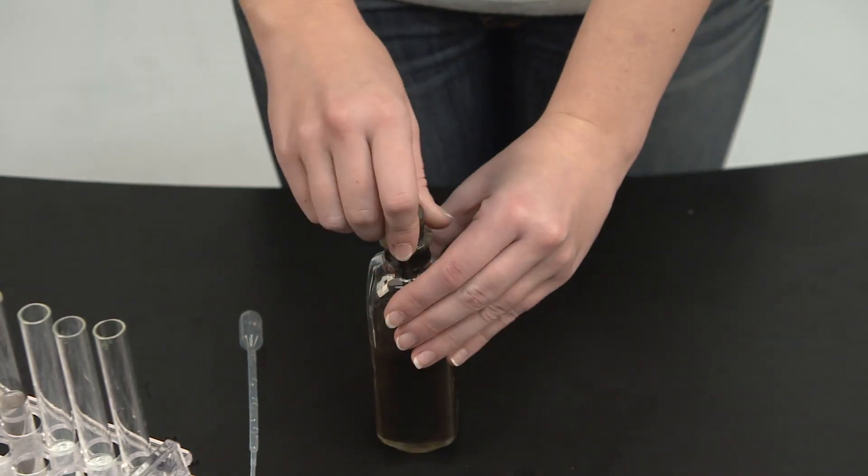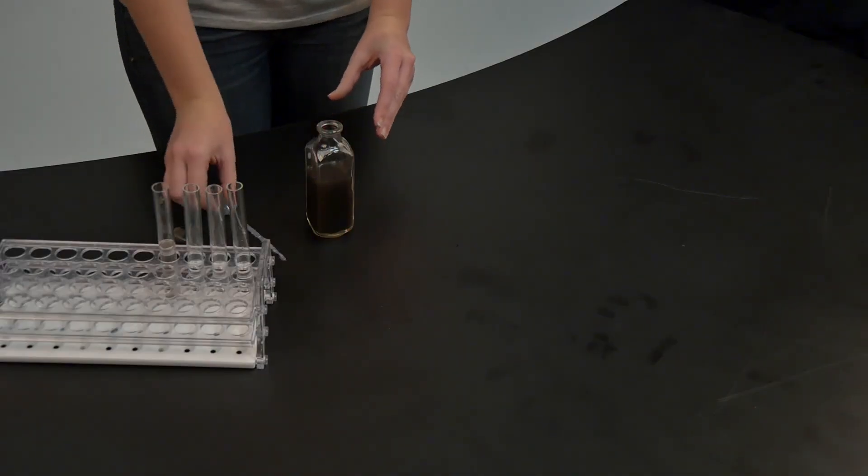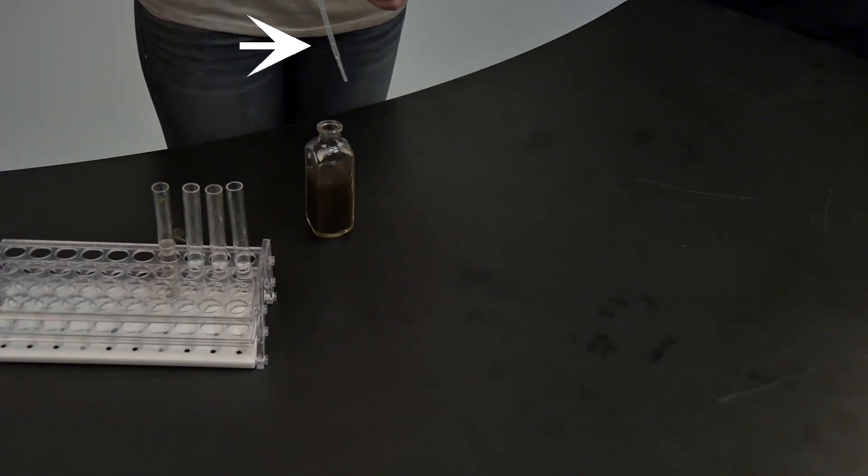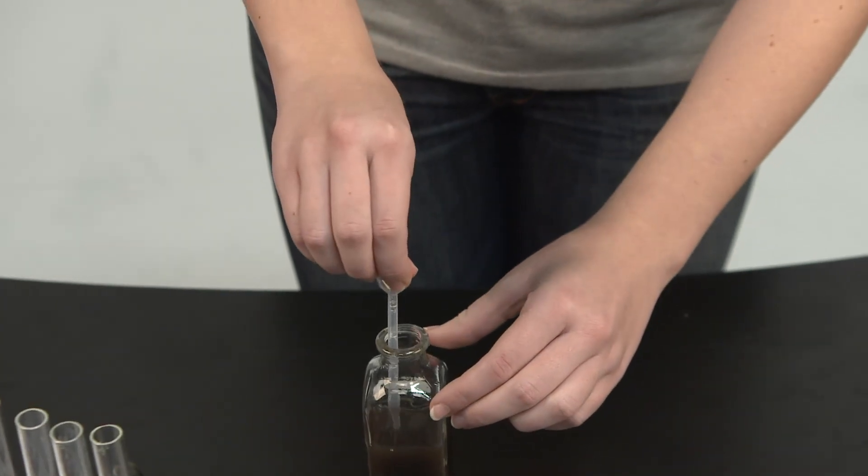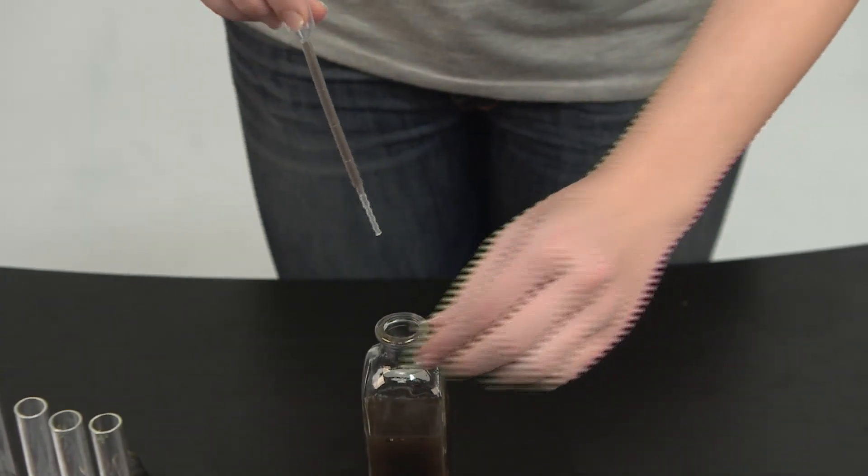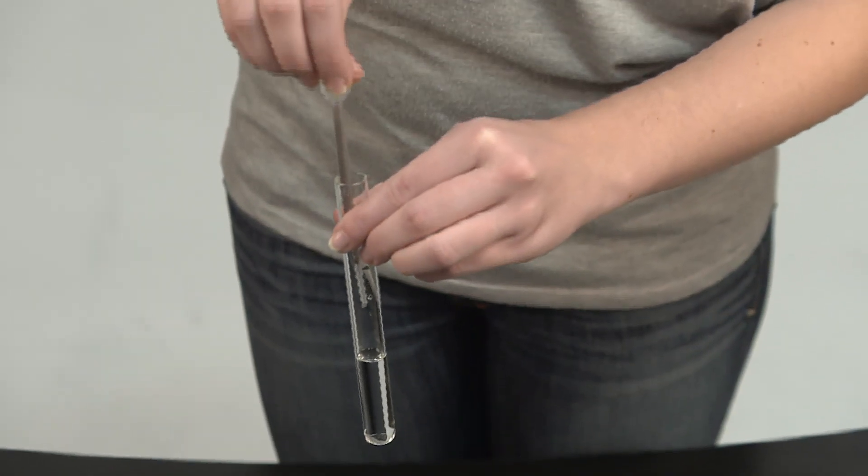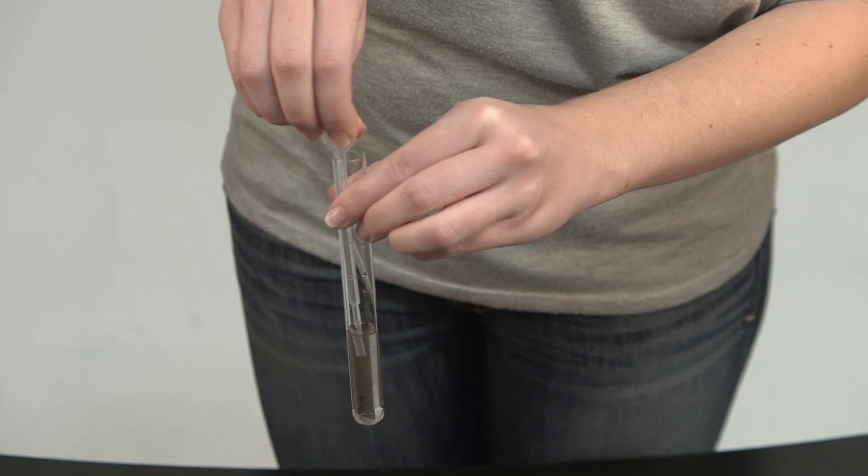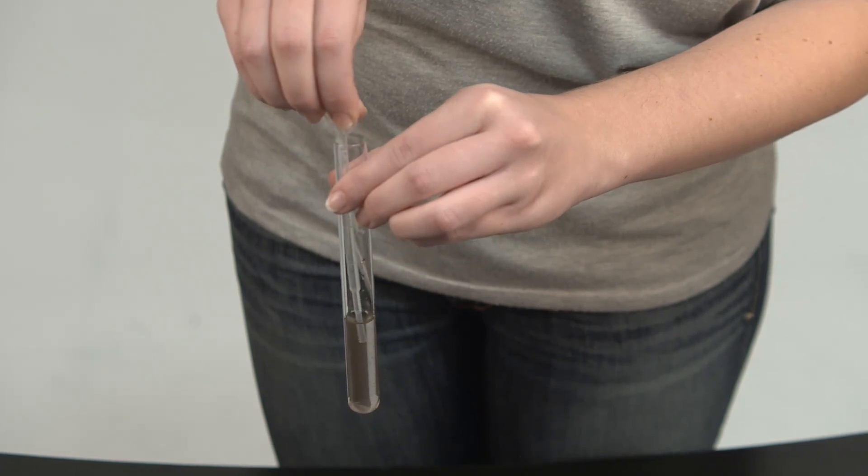After you have thoroughly mixed your soil sample in water, remove one milliliter using a plastic transfer pipette. Transfer this from one container into another container that has only pure water in it. Pipette up and down in order to mix thoroughly.